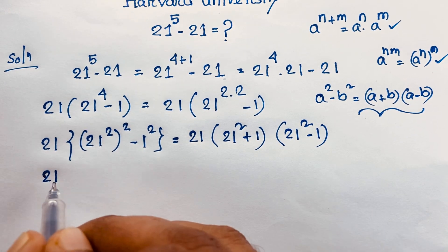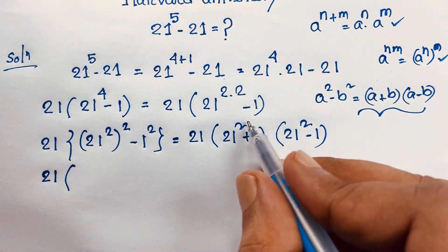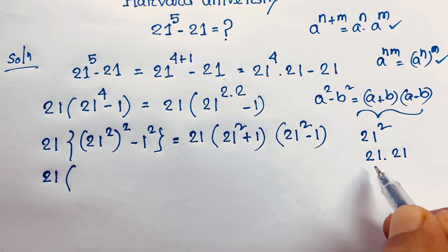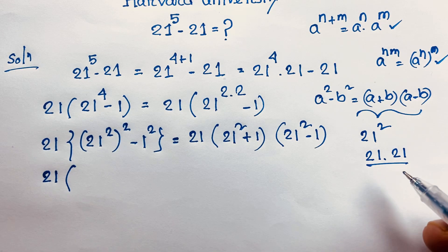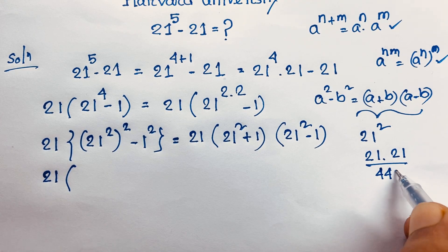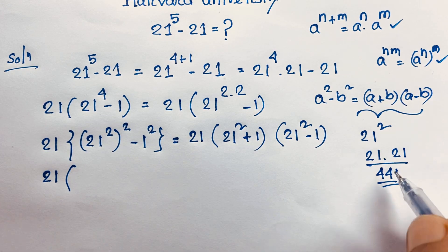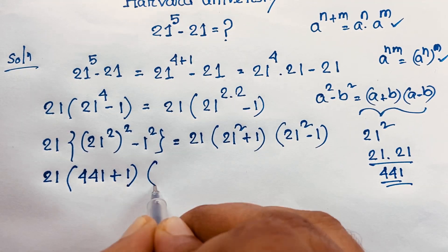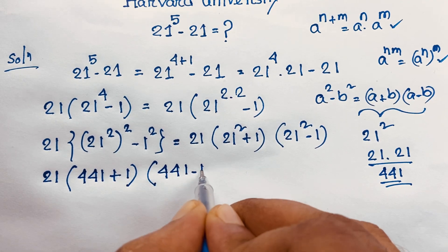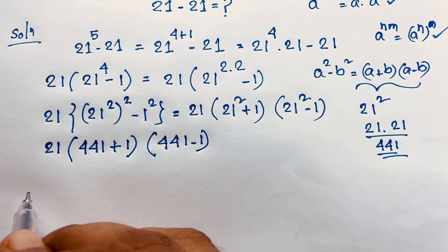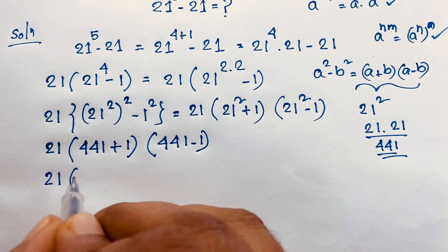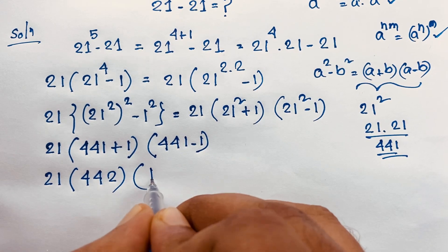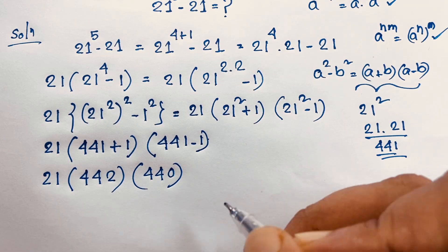Now, 21 squared is equal to what? 21 times 21 equals 441. So we have 21 times (441 plus 1) times (441 minus 1), which gives us 21 times 442 times 440.